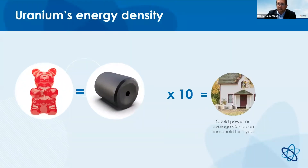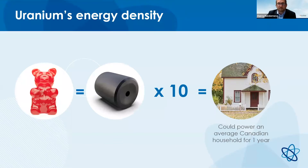Part of the benefit of nuclear power is it's a very dense form of energy — you get a lot of electricity with a small amount of fuel and a small footprint. One pellet of uranium about the size of a gummy bear, weighing about the same as a AA battery, creates as much energy as one ton of coal or 120 gallons of oil. Fewer than 10 of these pellets would be needed to power the average Canadian household for an entire year.